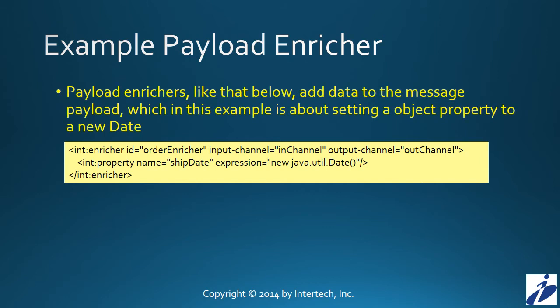In this example, we see a Payload Enricher. Unlike the header enricher that adds information to headers, a Payload Enricher, as its name would imply, is going to add data to the message payload. Presumably, the messages are going to have some sort of object in their payload — one that has a property, or instance variable, called ShipDate. What this Payload Enricher is doing is adding a new data object to that instance variable called ShipDate.